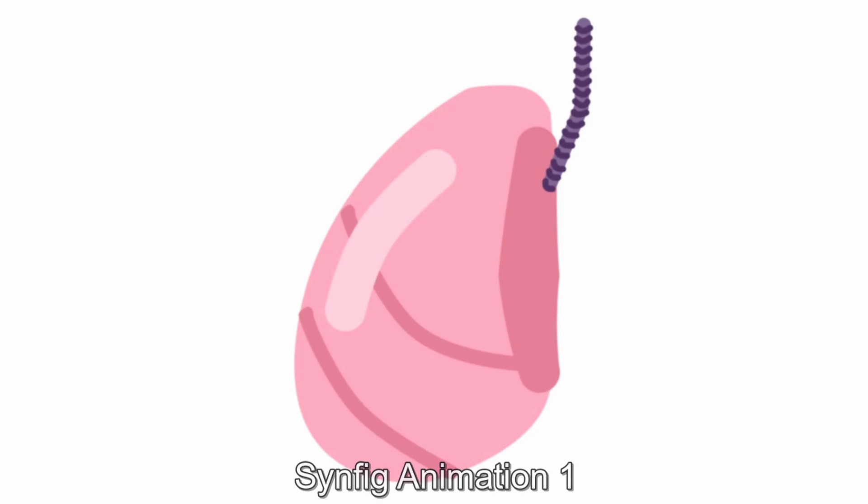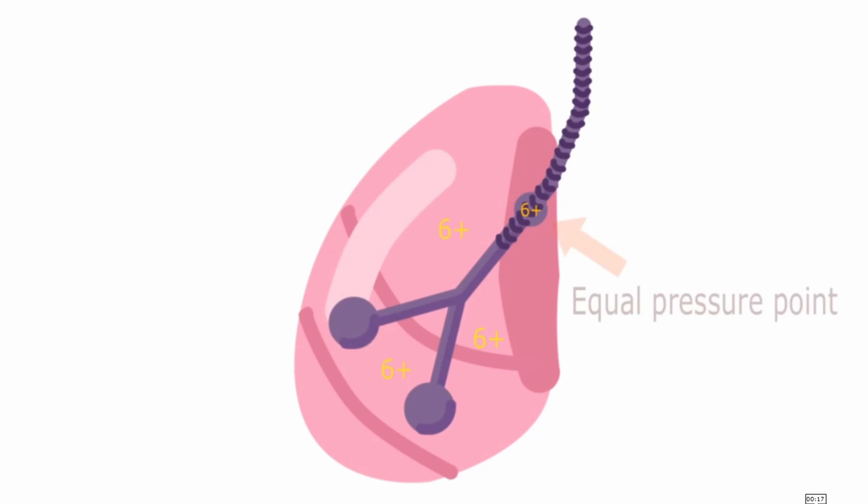And what is important to remember here is that the equal pressure point in the normal scenario is reached after we've reached a point in the bronchi where the bronchi is made up of cartilage.